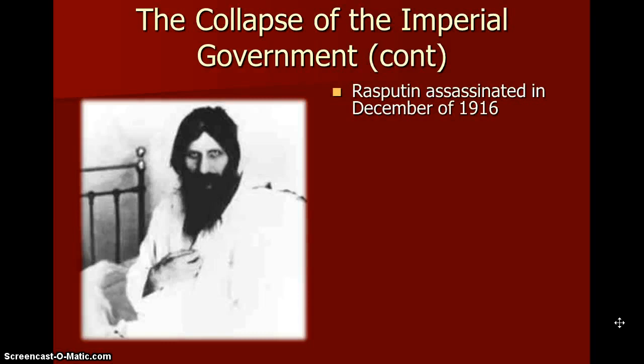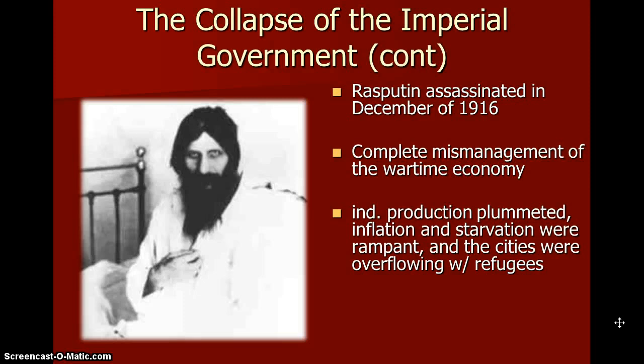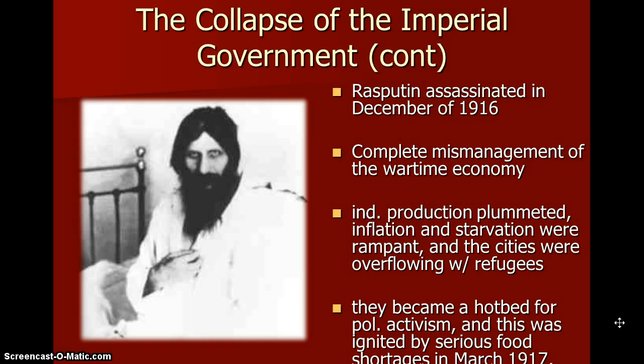We're getting closer to the Russian Revolution. There was complete mismanagement of the wartime economy — production plummeted, inflation and starvation were rampant, and the cities were overflowing with refugees. There was complete chaos and complete anarchy in the Russian land. The cities became a hotbed for political activism, and this was ignited by serious food shortages in March 17th. These are all some of the reasons that led to the Russian Revolution.